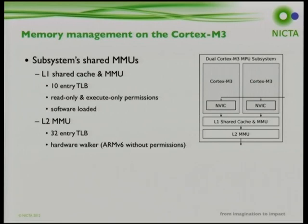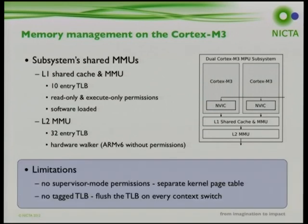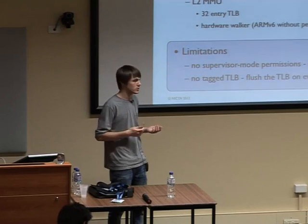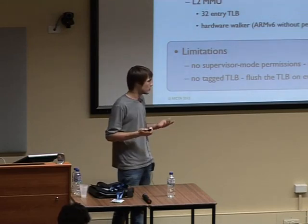We stuck with using just one M3 core to start. Linux expects supervisor mode permissions - TLB entries with a second set of permission bits for kernel mode - to protect kernel memory in user space and automatically enable access when trapping into the kernel. Since these MMUs lack that feature, we must maintain a separate address space for kernel versus user mode using a shadow page table.